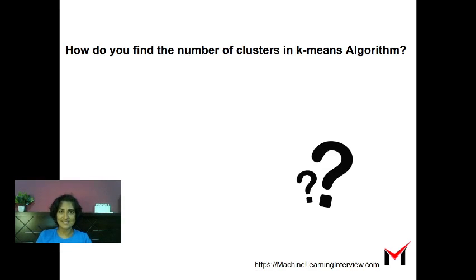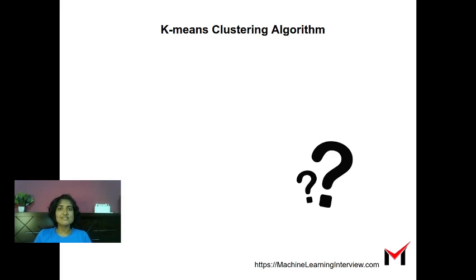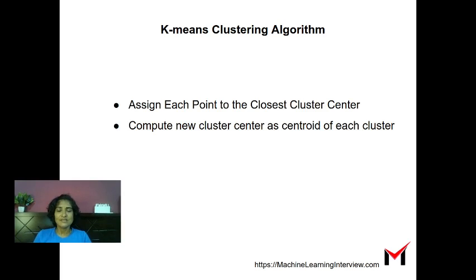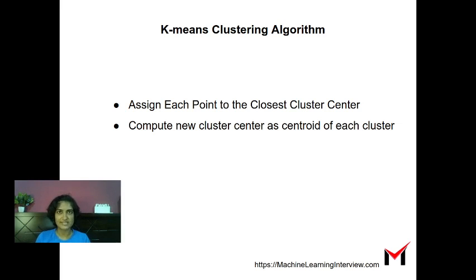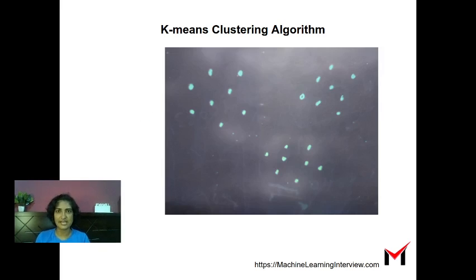How do you find the number of clusters in the k-means clustering algorithm? Let's recapitulate k-means first. It comprises two steps: you first initialize a set of cluster centers, then assign each point to the closest cluster center and compute a new cluster center as the centroid of each cluster. You keep repeating this until you get nice clusters.